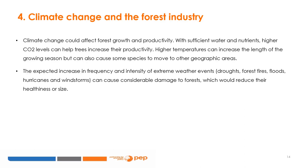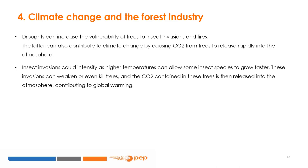Climate change can affect forest growth and productivity. With sufficient water and nutrients, higher CO2 levels can help trees increase their productivity. Higher temperatures can increase the length of the growing season, but can also cause some species to move to other geographic areas. The expected increase in frequency and intensity of extreme weather events — droughts, forest fires, floods, hurricanes, and wind storms — can cause considerable damage to forests. Insect invasions could intensify as higher temperatures allow some insect species to grow faster, and the CO2 contained in these trees is then released into the atmosphere, contributing to global warming.